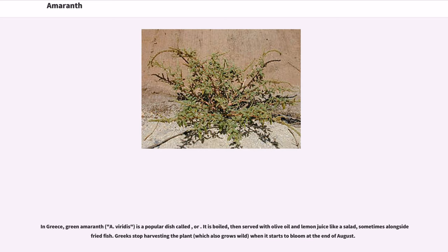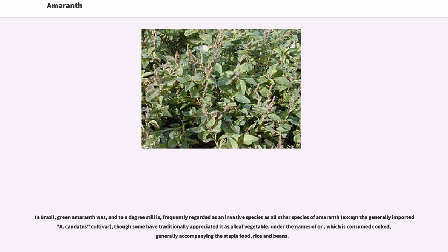In Greece, green amaranth (vlita) is a popular dish — it is boiled, then served with olive oil and lemon juice like a salad, sometimes alongside fried fish. Greeks stop harvesting the plant, which also grows wild, when it starts to bloom at the end of August. In Brazil, green amaranth was, and to a degree still is, frequently regarded as an invasive species, though some have traditionally appreciated it as a leaf vegetable, consumed cooked, generally accompanying the staple food of rice and beans.